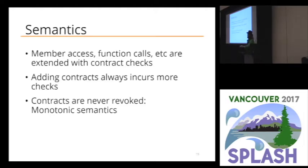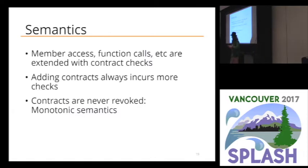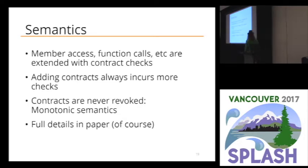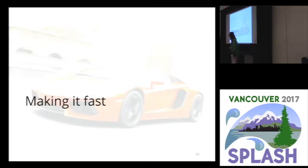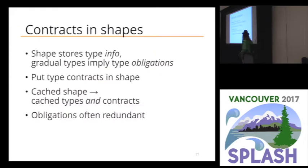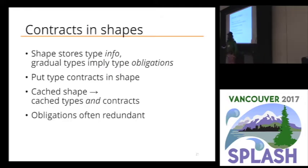That puts us in the monotonic semantics of gradual typing. If I say this is a list of integers, I can never later add anything to it — because somebody wanted it to be a list of integers. That's the semantics we want, and that's what we're going to build. If you remember my discussion about shapes, you can probably guess how we're going to make this fast: we're going to put the contracts in the shape. That's it — that's the entire paper. Take the contracts. Put them in the shape. The shape already stores type information, telling us what the types are. The contracts tell us what the types must be. So put the contracts in the shapes.